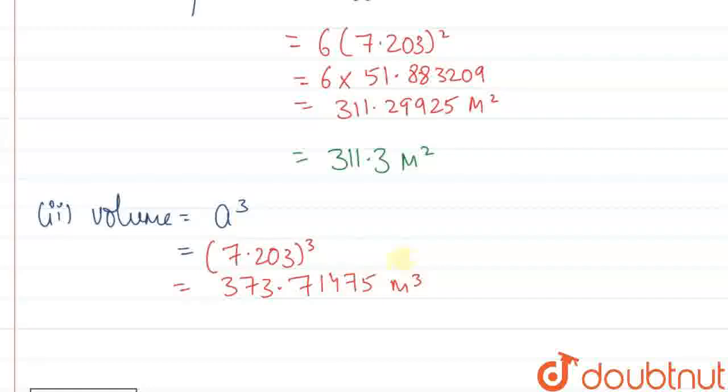And now we also have to convert this to the correct significant figures. So the answer should have 4 significant figures. When we round off this from 7, then 1 is smaller than 5, so 7 will be 7. The final answer will be 373.7 meter cube. This will be the final answer.